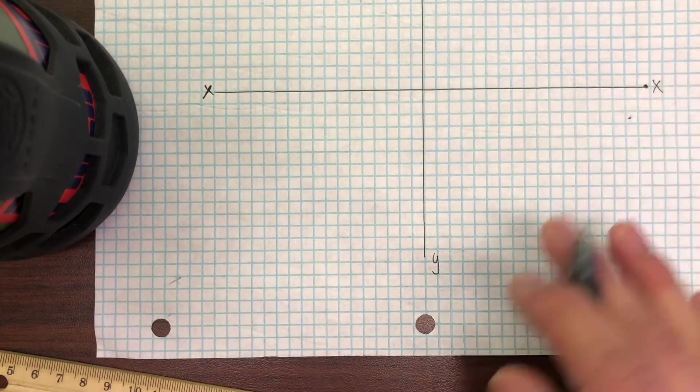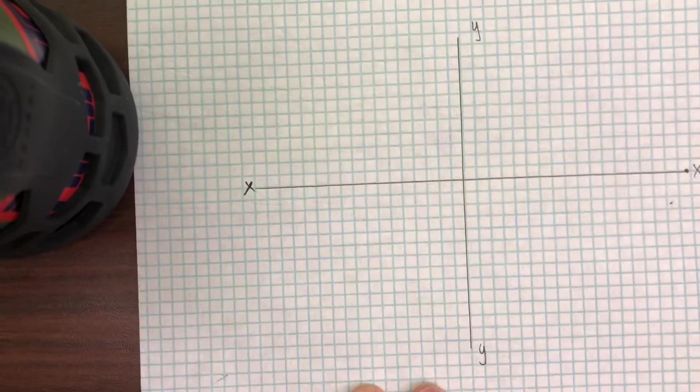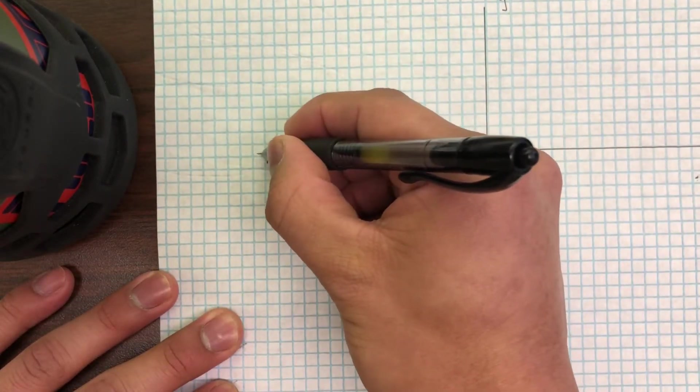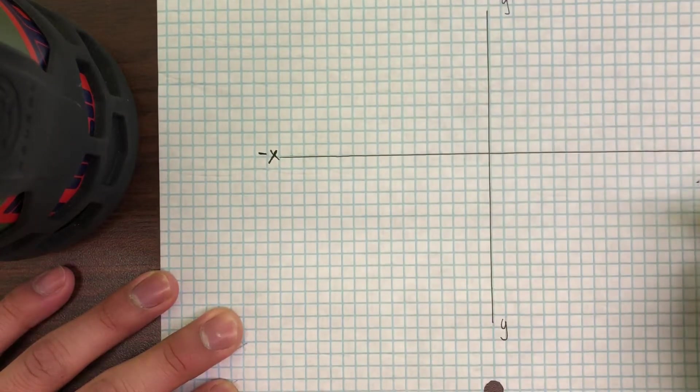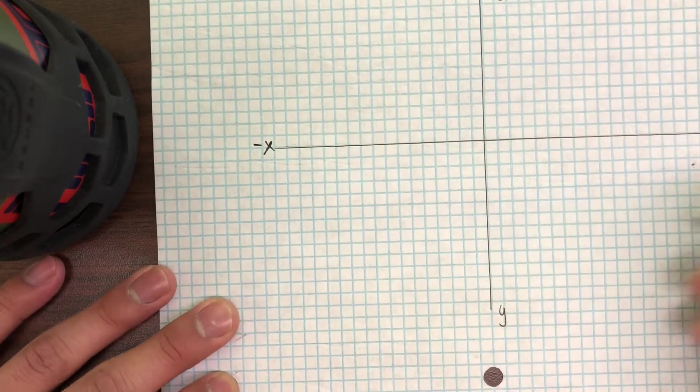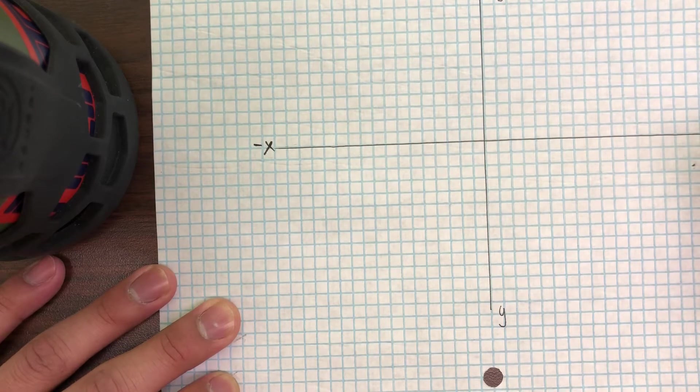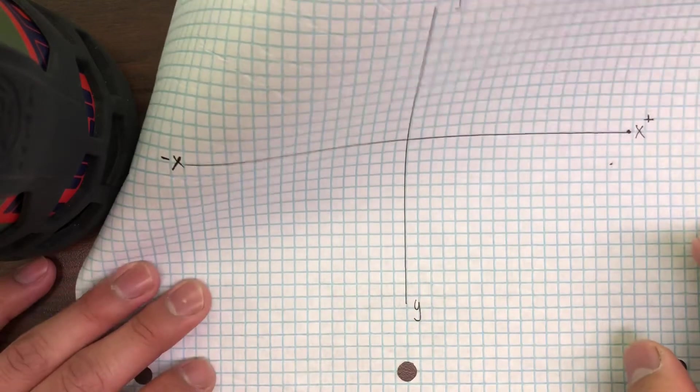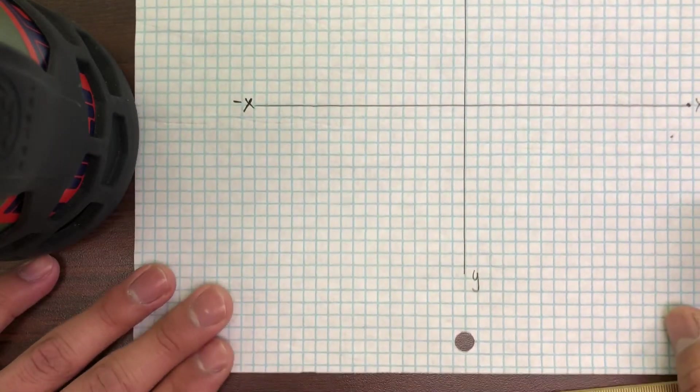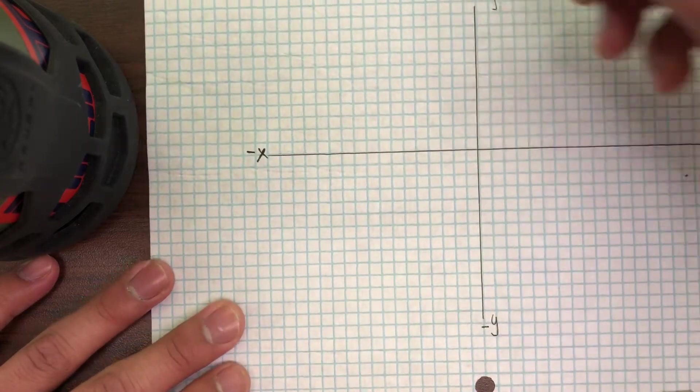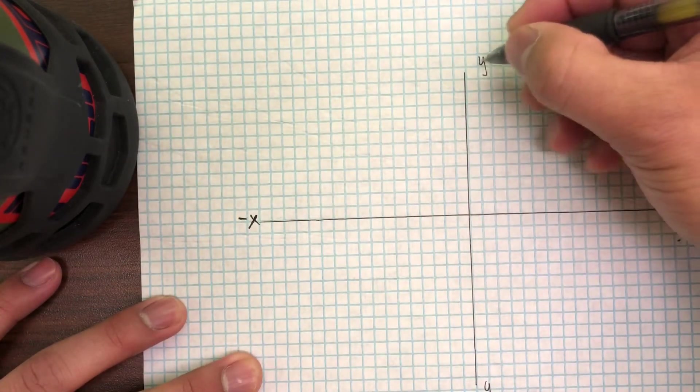Now my negative numbers on my X axis are gonna go this way, so I'm gonna label the X as a negative there. And then this is gonna be my positive numbers, so I'm just gonna put a little plus sign here to remind me. The bottom Y is gonna be negative numbers, and then the top one here is gonna represent my positive numbers.